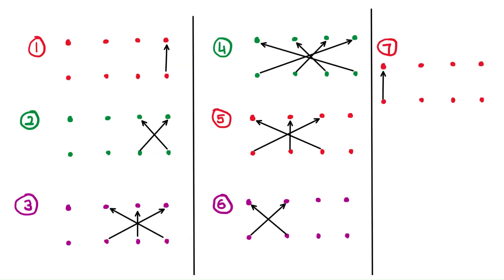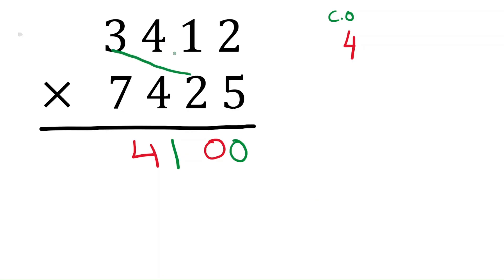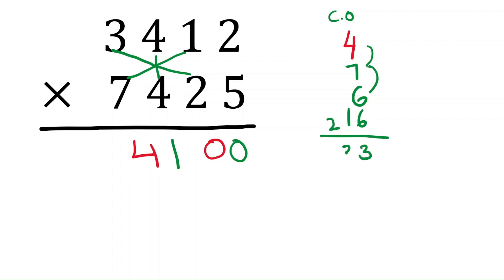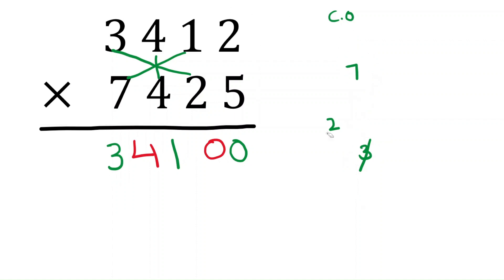Step five: tens with thousands and hundreds with hundreds. Seven times one is seven, three times two is six, four times four is sixteen. Adding together with carryover: eleven, plus six is seventeen, plus six is twenty-three, plus two is twenty-five — that gives thirty-three. Write the last digit three in the answer. The carryover is three.